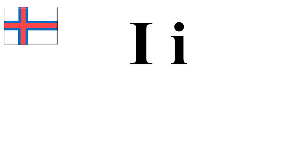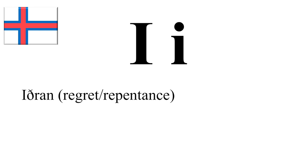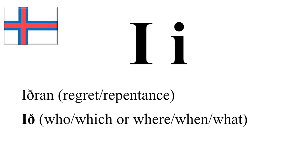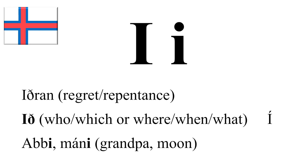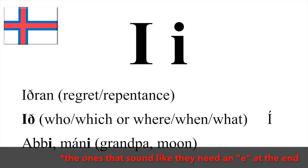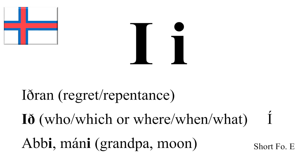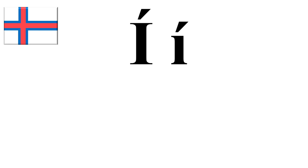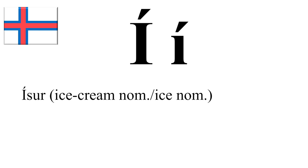Then we have I, as in I-RAN. Now this is a special one — when E is paired with E on its own, then it's UØ. And it can mean different things: it can mean who, or which, or where, when, what — it really depends on the sentence. And then since Faroese words don't end with E, they're most likely going to end with E instead, but it still has the sound of E. So ABBÄ, MÄNÄ — the short Faroese E. And then we have UØ, as in UØSÅR. But in this example, UØRLAND sounds more like UØ.